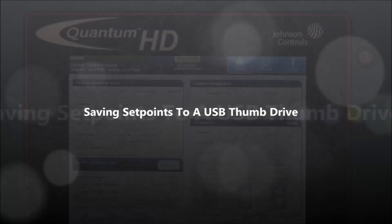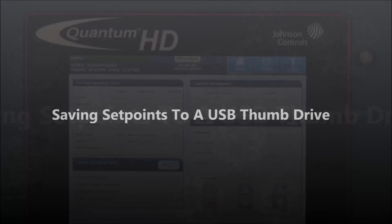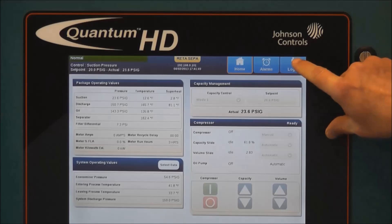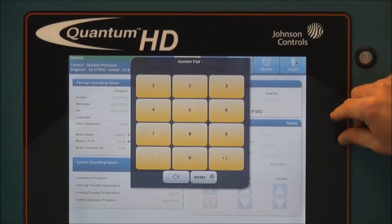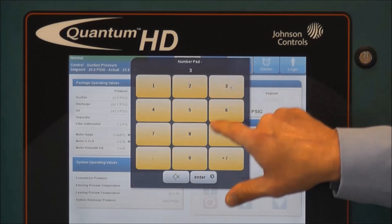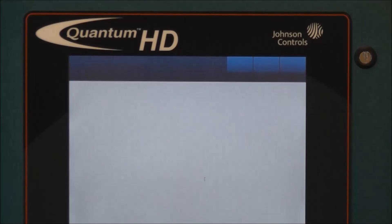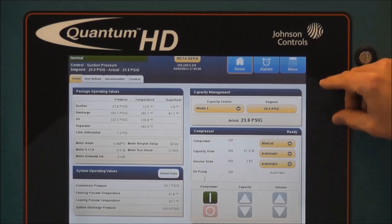Now that we have the door closed on the Quantum HD controller, we can go ahead and do the process of saving the setpoints file to a USB thumb drive. The first part of doing this will be to log in to the controller by hitting login and entering in your personal identification number and then pressing enter. Once we've logged in, the login button now changes to menu.